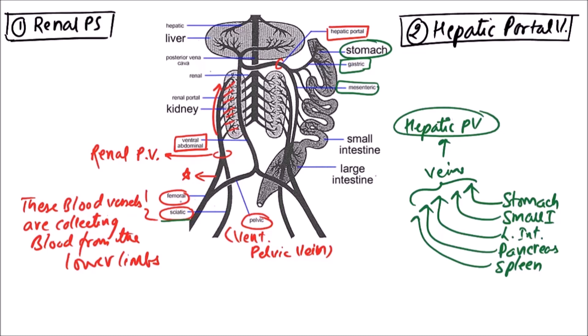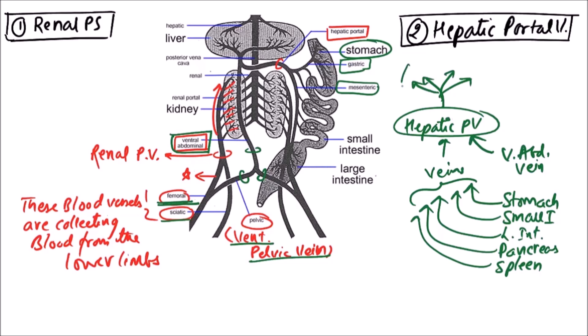The femoral vein divides to form two branches: the first one fuses with the sciatic, and the other one is the ventral pelvic vein. The ventral pelvic veins of the right and left side finally fuse to form a single vein known as the ventral abdominal vein. This ventral abdominal vein also fuses with the hepatic portal vein, and finally it divides to form several branches ending as capillaries into the liver.